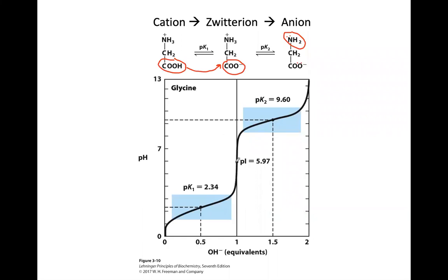This is known as the equivalence point, or pI — also called the isoelectric point. Why isoelectric? Because at this point the amino acid is neutral: the amino group is fully protonated with a full positive charge, and the carboxylate is fully deprotonated with a full negative charge. So the net charge is zero. If you put this amino acid in an electric field, it will not migrate toward either electrode because it has no net charge. The pI is reached after adding one equivalent of hydroxide ion.